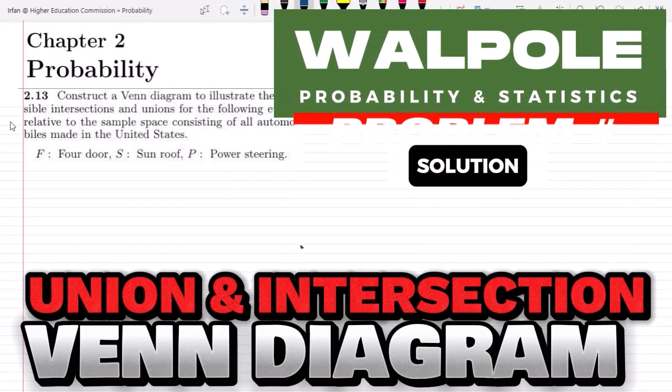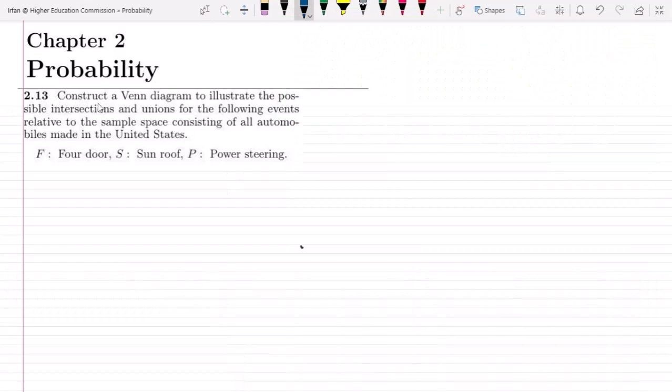Welcome back guys, I hope all of you will be fine. So this is question 2.13, and the statement is: construct a Venn diagram to illustrate the possible intersections and unions for the following events relative to the sample space consisting of all automobiles made in the United States.